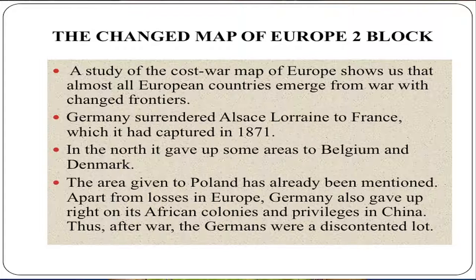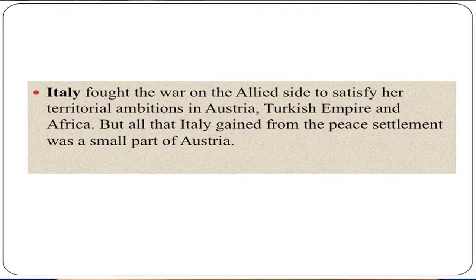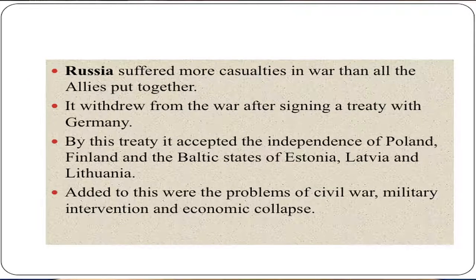A study of the post-war map of Europe shows that almost all European countries emerged from war with changed frontiers. Germany surrendered Alsace-Lorraine to France, which it had captured in 1871. In the north, it gave up some areas to Belgium and Denmark. Apart from losses in Europe, Germany also gave up rights on its African colonies and privileges in China. Thus after the war, the Germans were a discontented lot. Italy fought the war on the Allied side to satisfy her territorial ambitions in Austria, the Turkish Empire, and Africa, but all that Italy gained from the peace settlement was a small part of Austria. Russia suffered more casualties in war than all the Allies put together. It withdrew from the war after signing a treaty with Germany, by which it accepted the independence of Poland, Finland, and the Baltic states of Estonia, Latvia and Lithuania. Added to this were the problems of civil war, military intervention, and economic collapse.